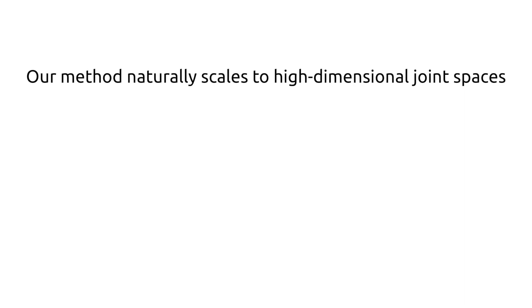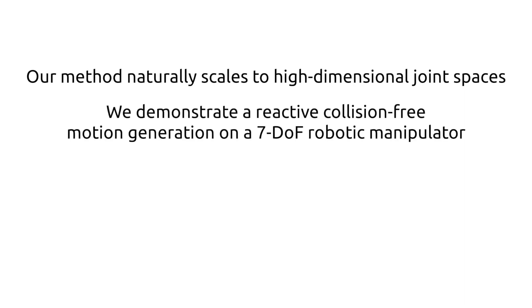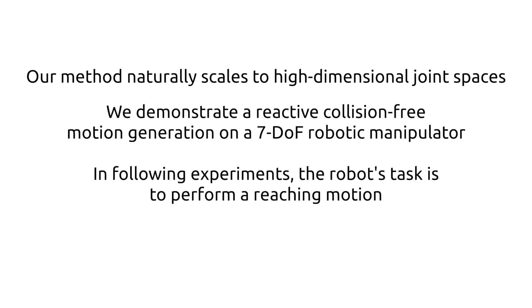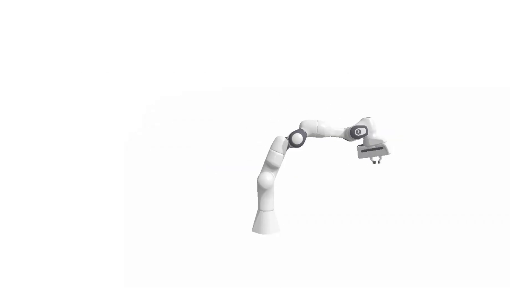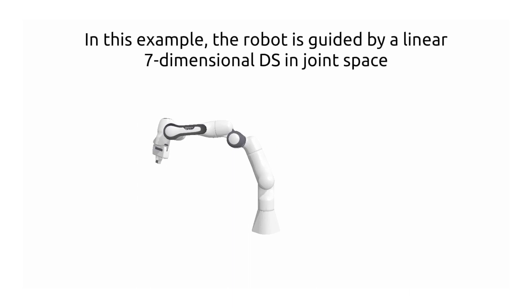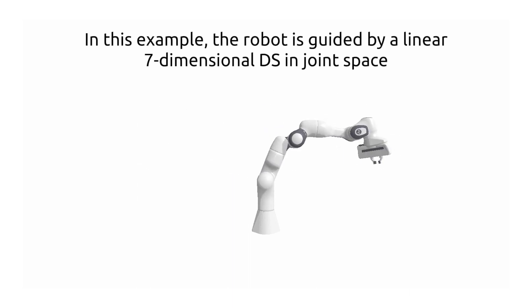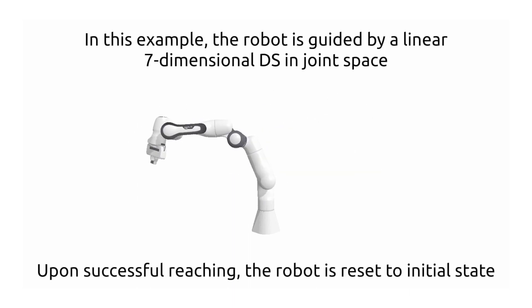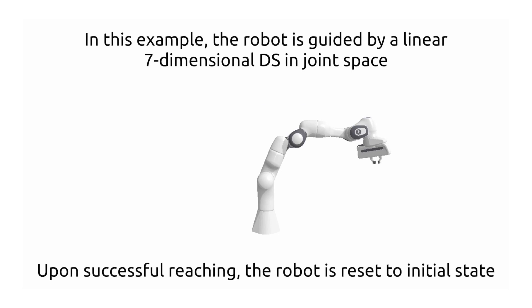This approach naturally scales to joint spaces of robots of higher dimension. We demonstrate collision-free navigation on a seven-dimensional robotic arm. In this set of experiments the robot's task is to perform a reaching motion from one side to another. As soon as the robot reaches the goal it is reset to initial state.